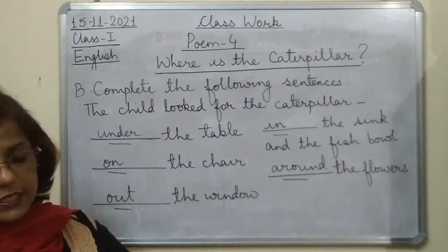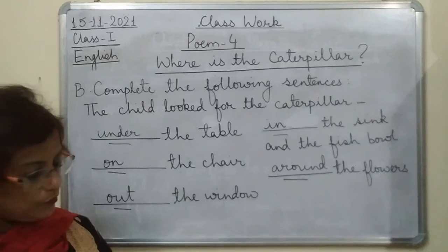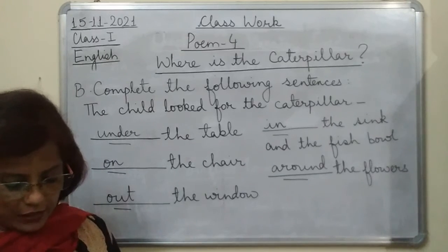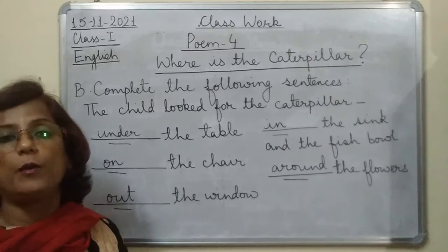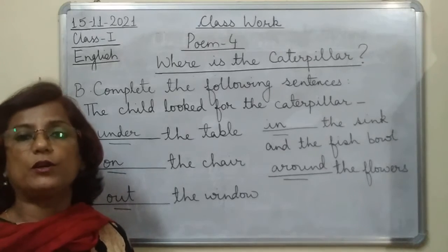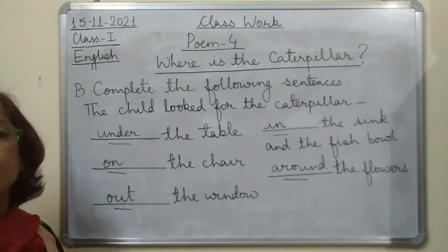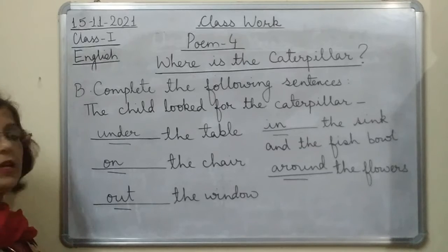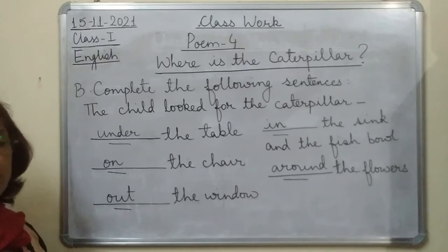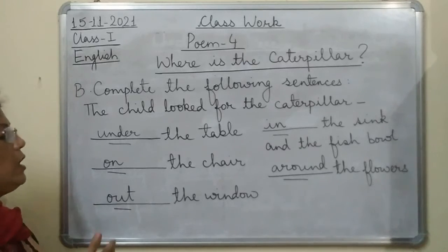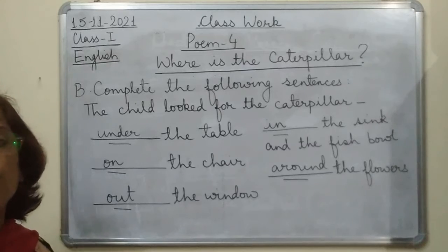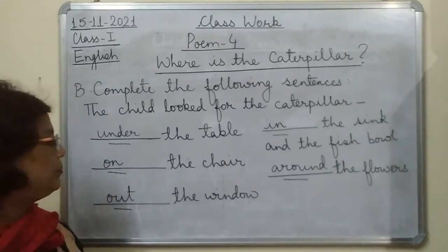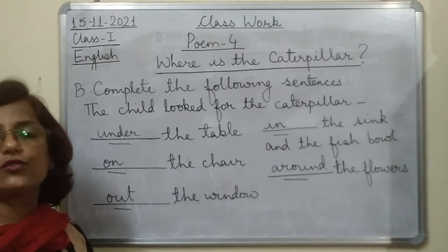So I hope you all have written these words in the book and you can read them yourself, because the sentences are from the poem itself. And then we will be doing exercise C, that is 'Unjumble the letters and write the correct words with the help of the poem.' I hope everyone has written this. You can take a screenshot if you have not.